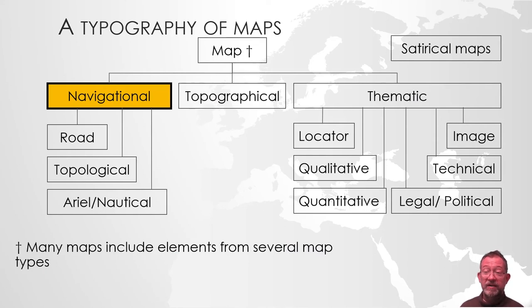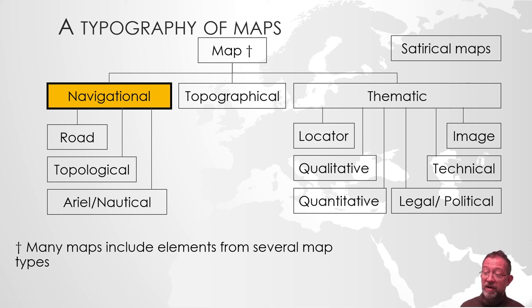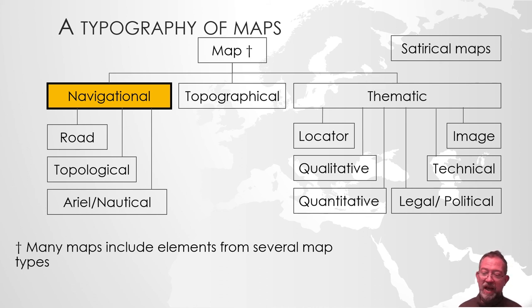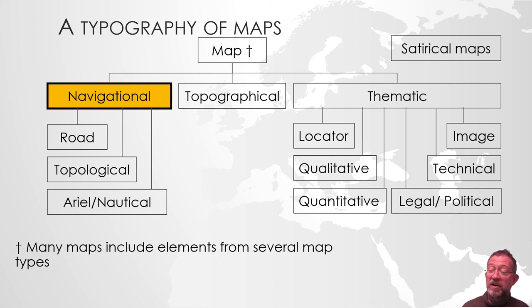Looking at different types of maps, I have broadly identified three main categories: navigational maps, topographical maps, thematic maps, and then satirical maps. It's very seldom we find clear one-type maps — they have borrowed aspects from each other, so many maps include elements of different types, but we can still identify them as being primarily one type or another.